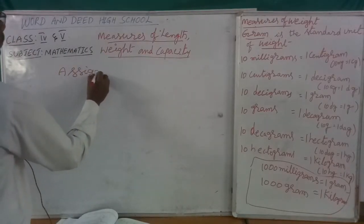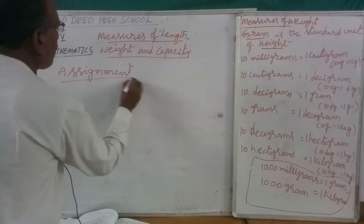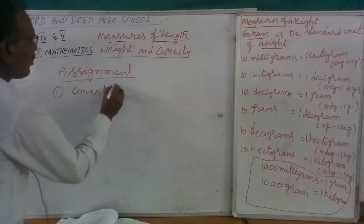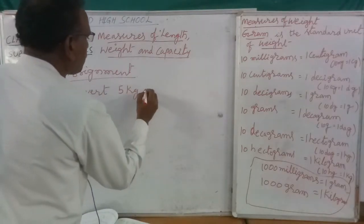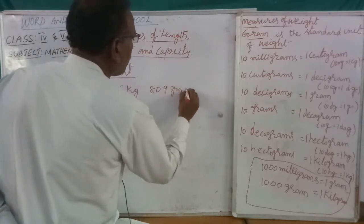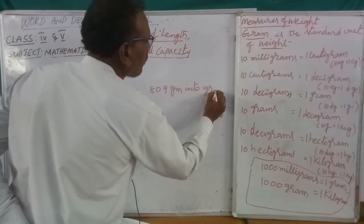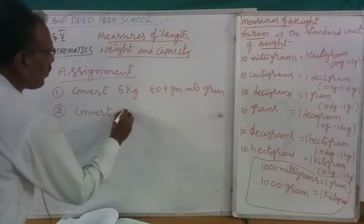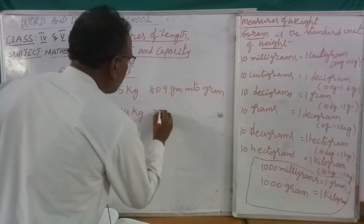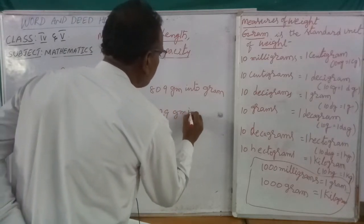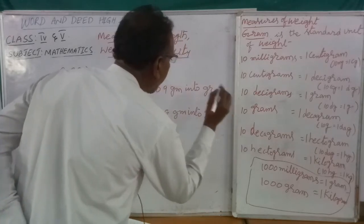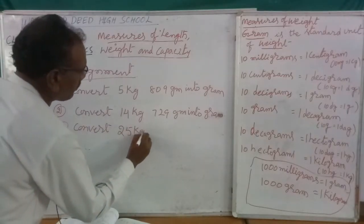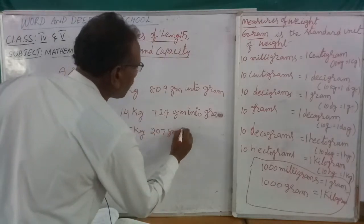Assignment for you children. Problem number 1: convert 5 kilograms 809 grams into grams. Problem number 2: convert 14 kilograms 729 grams into grams. Problem number 3: convert 25 kilograms 207 grams into grams.